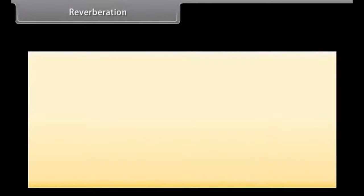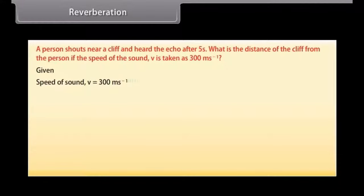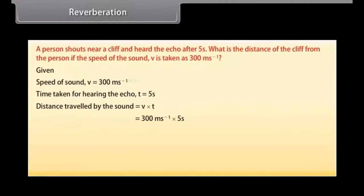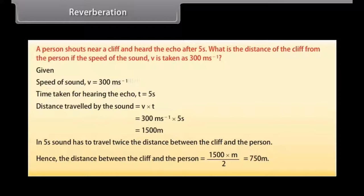Let's now solve a problem. A person shouts near a cliff and hears the echo after 5 seconds. What is the distance of the cliff from the person if the speed of the sound V is taken as 300 meters second raised to the power minus one. Given that the speed of sound V is 300 meter second raised to the power minus one. Time taken for hearing the echo T is 5 seconds. Distance travelled by the sound is equal to V into T which is equal to 300 meter second raised to the power minus one into 5 seconds is equal to 1500 meters. In 5 seconds sound has to travel twice the distance between the cliff and the person. Hence the distance between the cliff and the person is 1500 meters by 2 that is 750 meters.